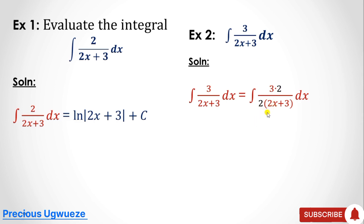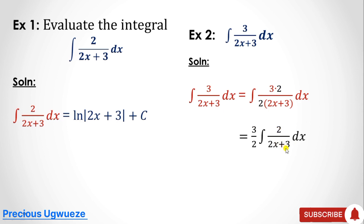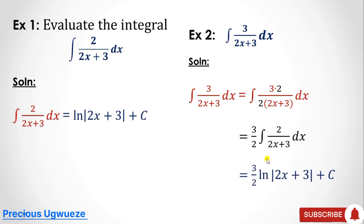We then factorize out 3/2. Now the function satisfies the condition where the numerator is the derivative of the denominator, and we apply the rule. That gives us the natural log of the denominator, with 3/2 outside. You can bring the 3/2 up as a power using logarithm laws if you wish — in any case, this is our solution.